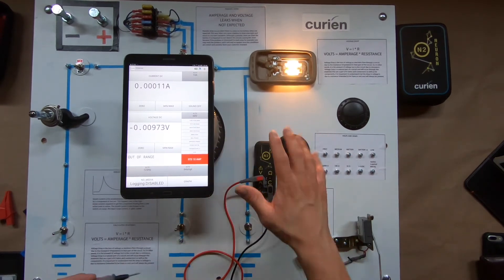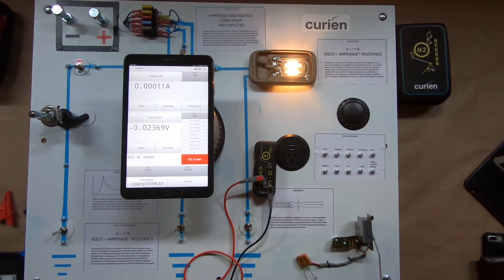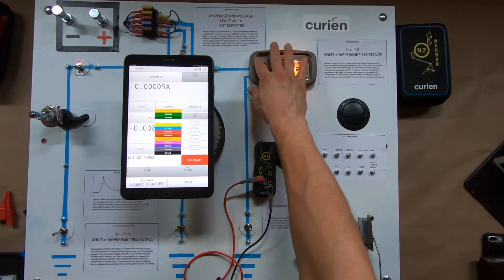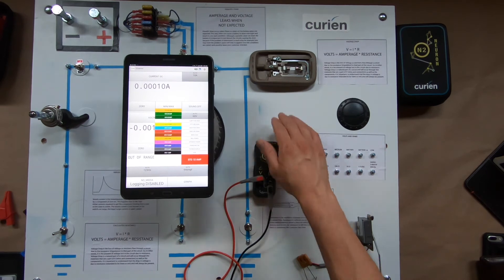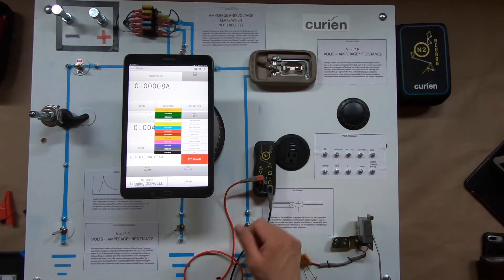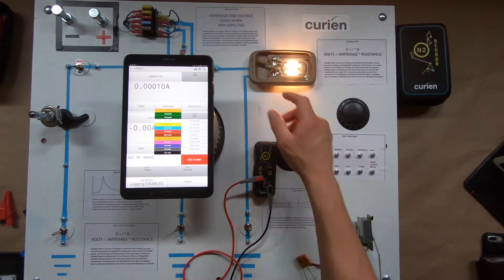One of the advantages of having the N2 connected with our app is we can actually do a lot of interpretation for you and a lot of math. So right now, as we were looking earlier through this circuit, we were noticing that there was an amperage draw even though it's not on. But we can go ahead and take a look at that through our parasitic draw testing because more than likely something like that would give you an issue.